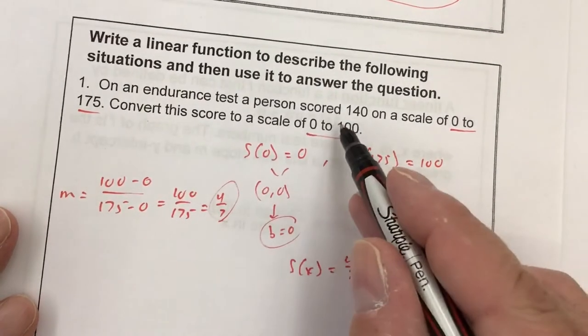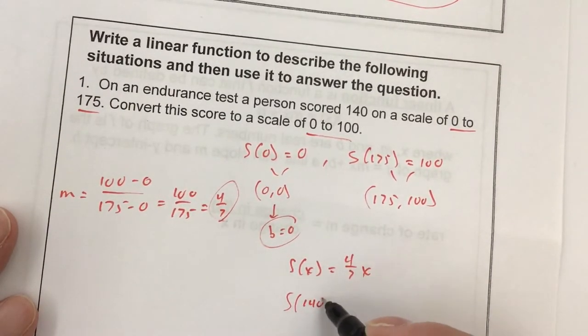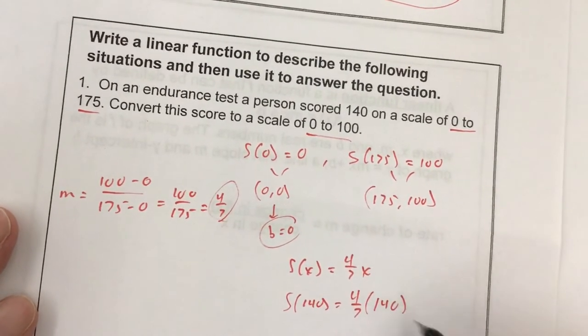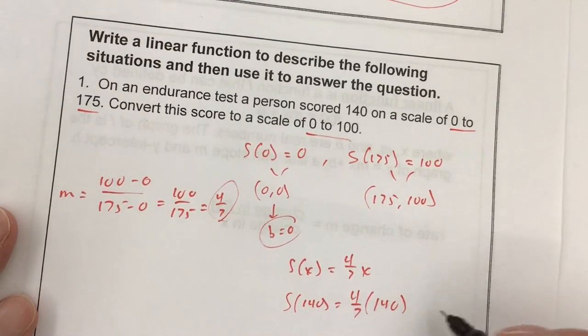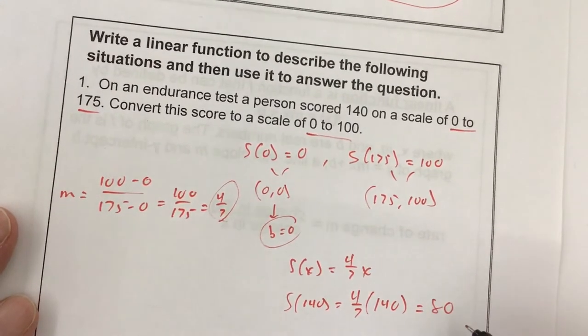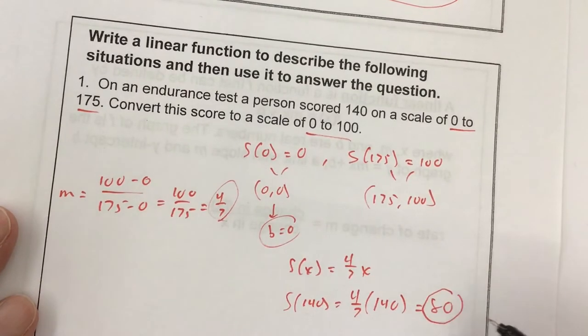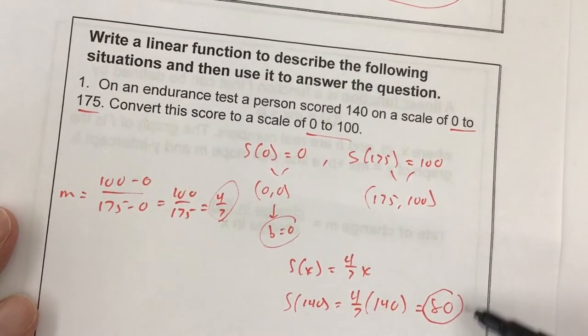Now, this person scored a 140. So I need to find s(140). I'm just taking 4/7 times 140. 140 divided by 7 is 20. 20 times 4 is 80. So on the 140 from that 0 to 175, it becomes an 80 when it's 0 to 100.